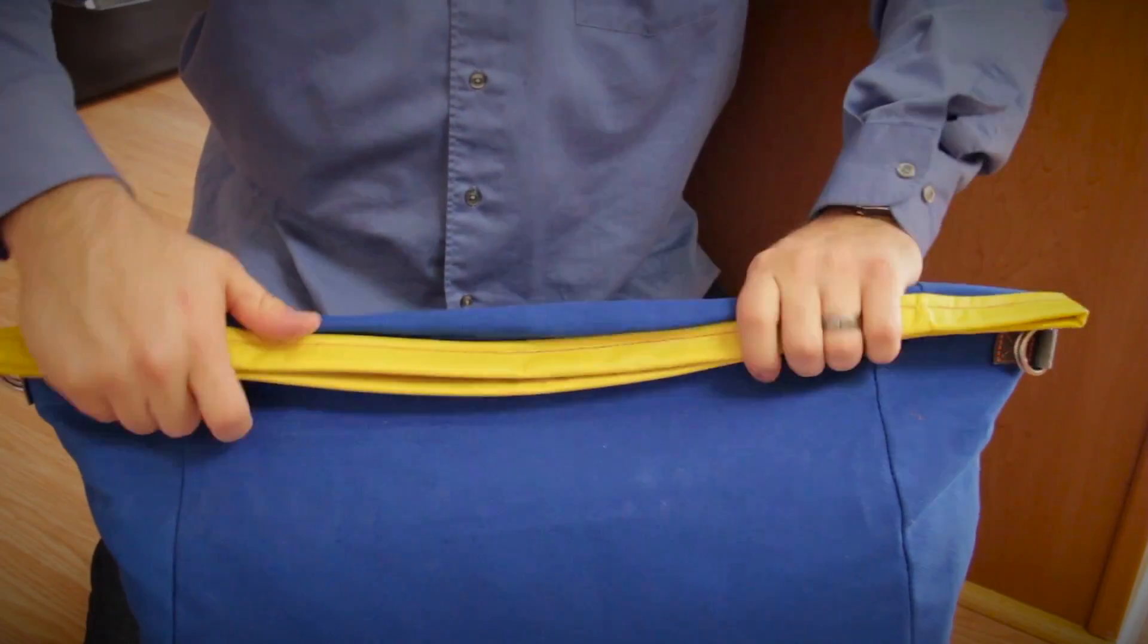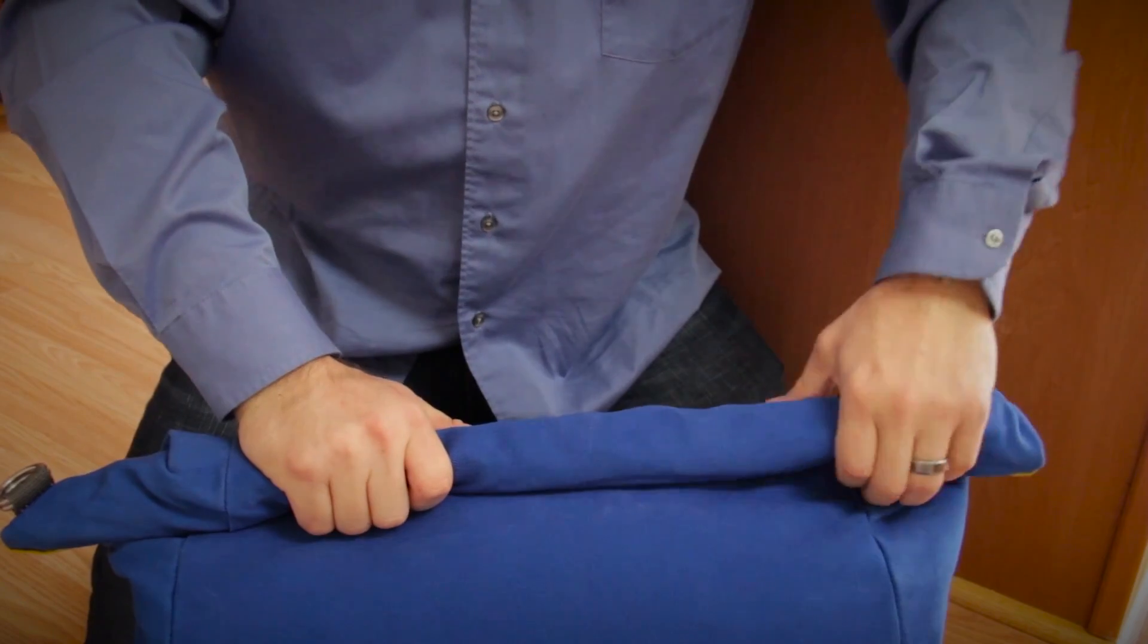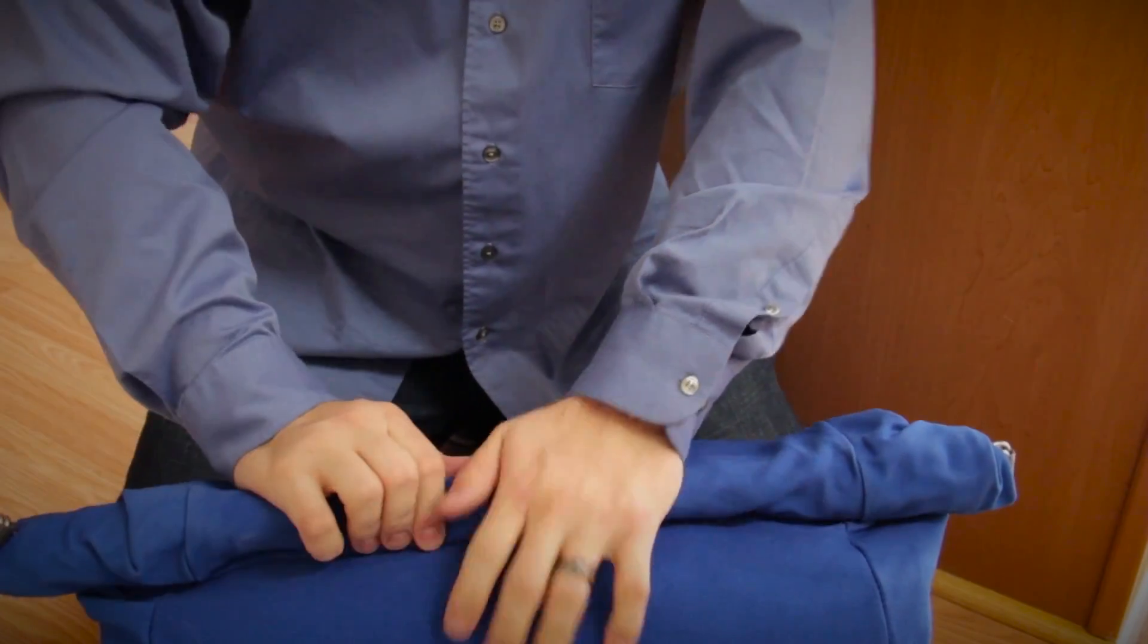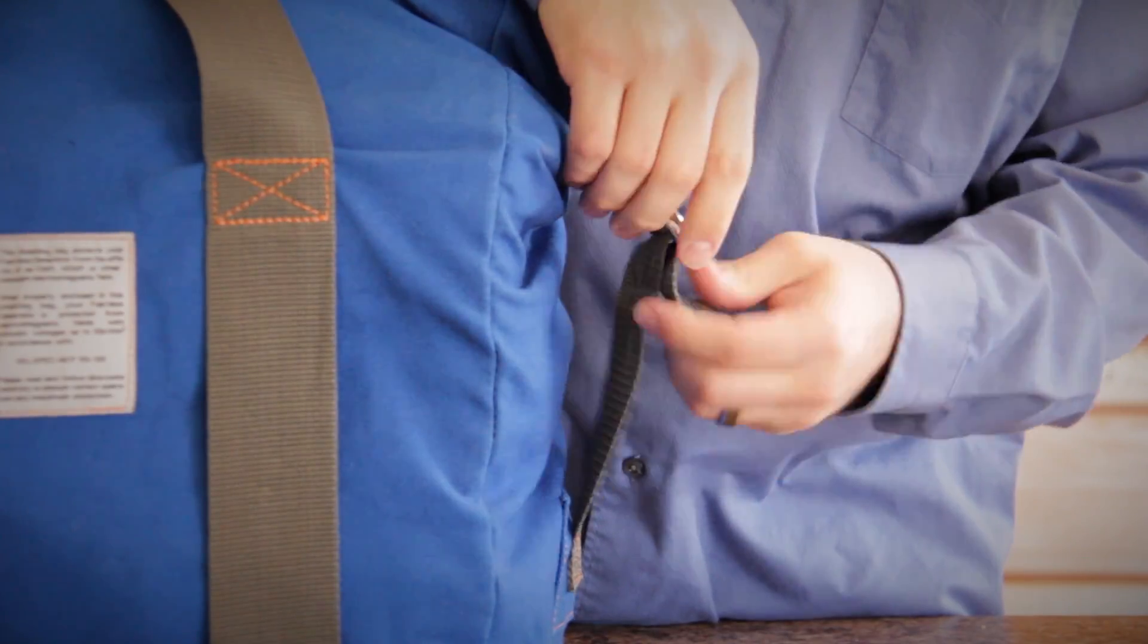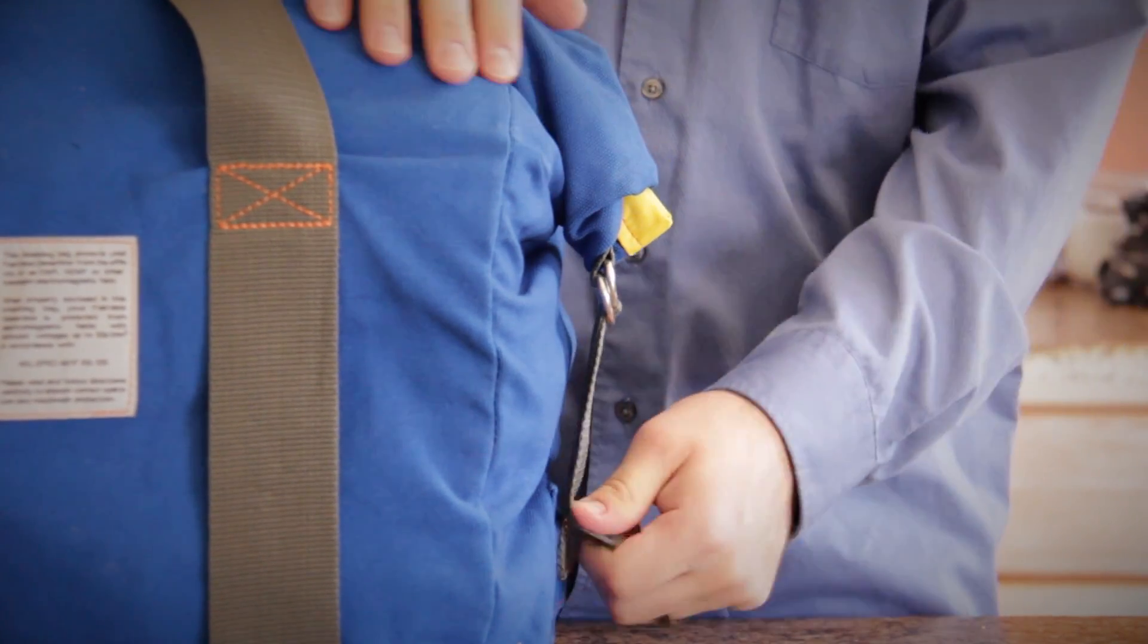Now, to seal the bag, press the sides tightly together and roll down towards the front or back. Make sure it's snug and uniform all the way across. Then use the straps on each side to cinch the top down securely through these D-rings.